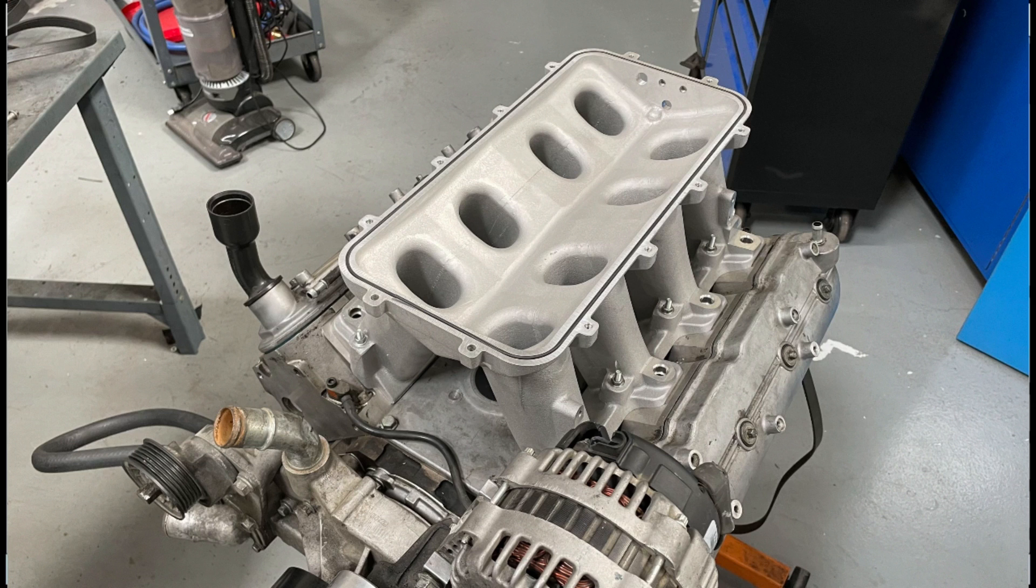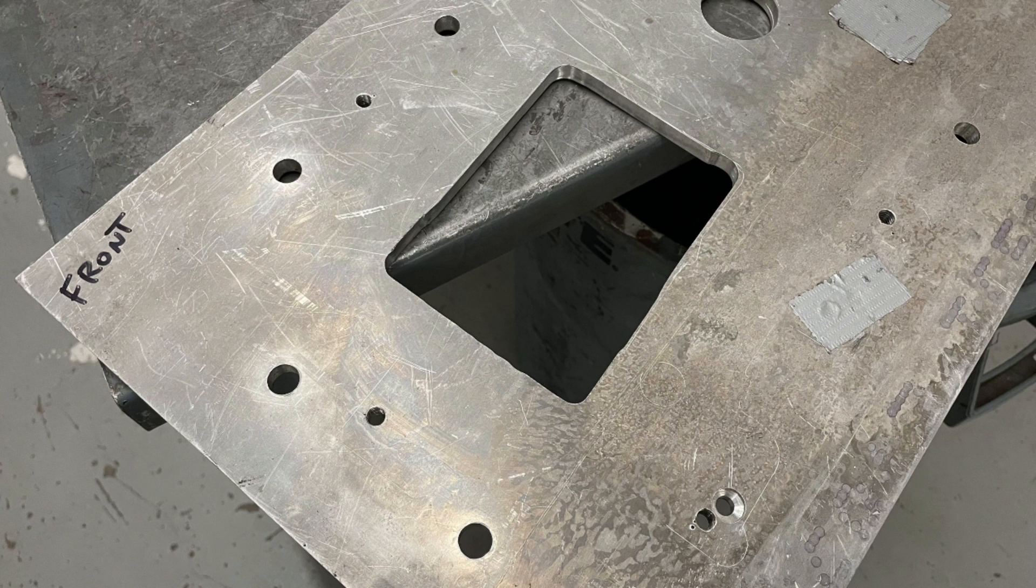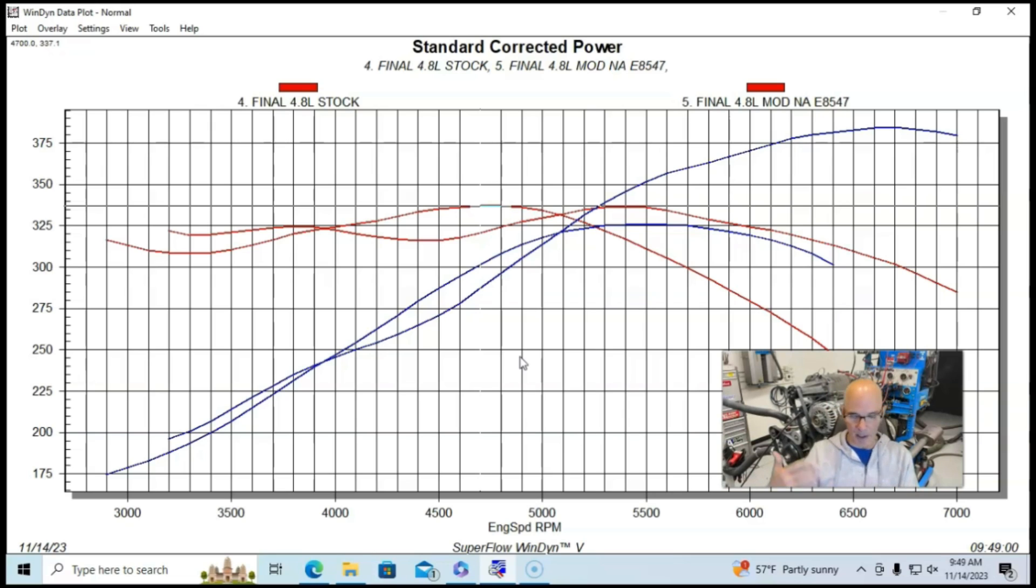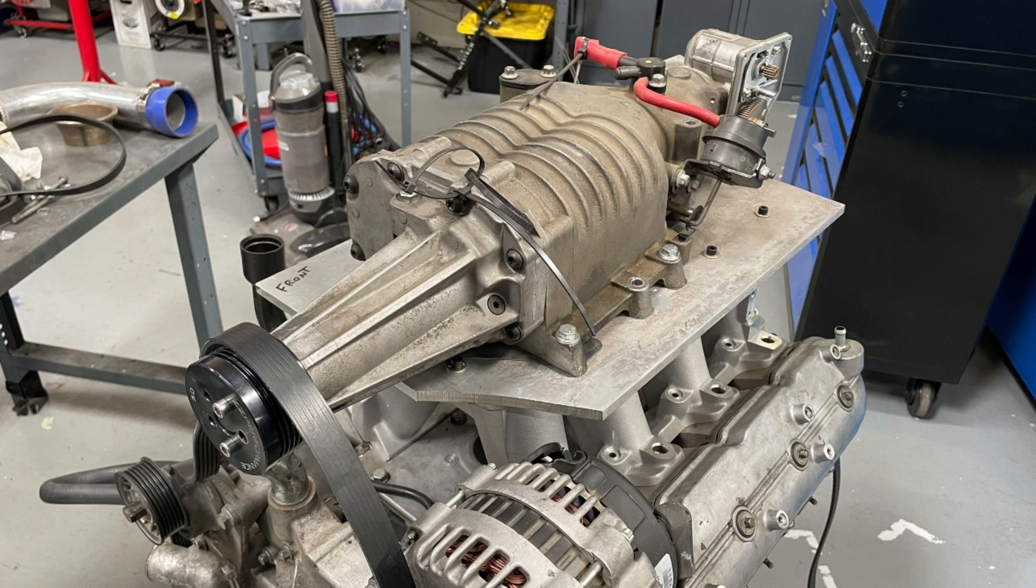The adapter plate that I made, I'll show you here, was designed to attach the blower to this Hi-Ram. It had that mounting pattern in it, so we had a flat plate that bolted to the top of the Hi-Ram and then the blower bolted to this plate. That way we could mount the M90 on the 4.8 liter because it didn't have a dedicated manifold for it.